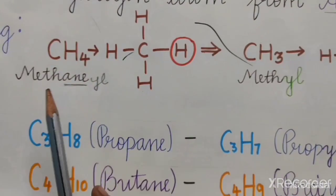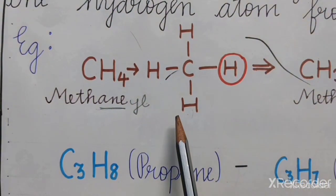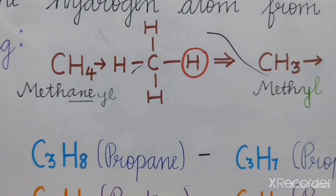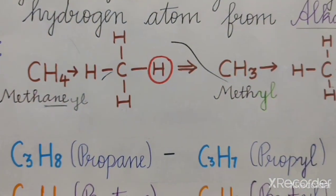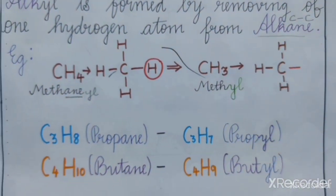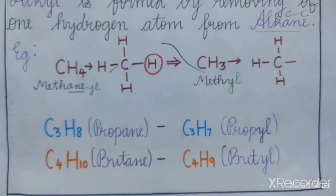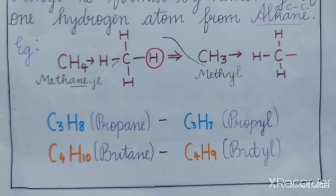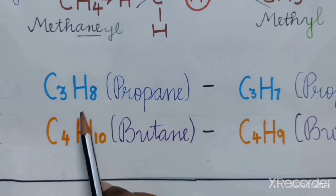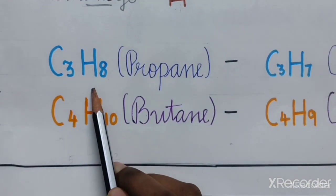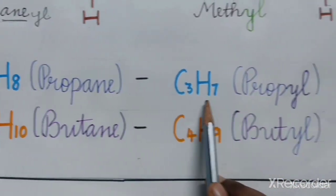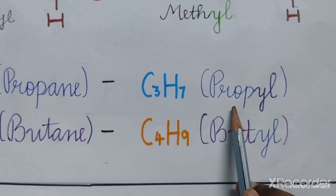But if we remove two hydrogen atoms from methane, it does not form an alkyl. Therefore, for alkyl, only one hydrogen atom has to be removed. For example, if we remove one hydrogen from C3H8, that is from propane, we get C3H7, that is propyl.